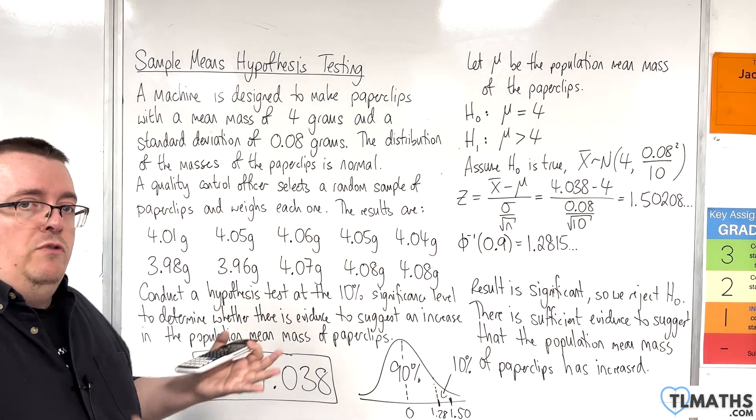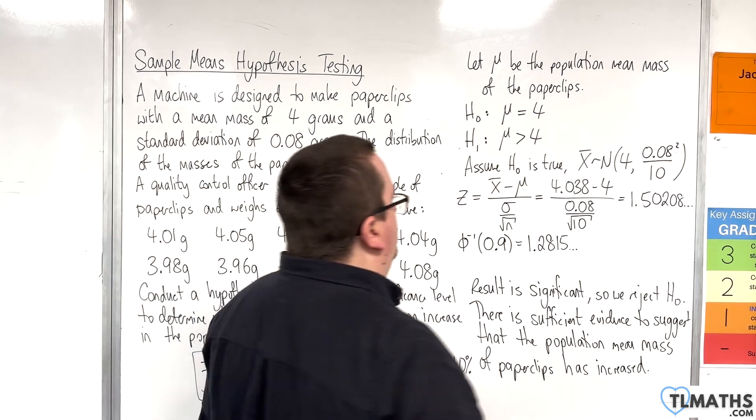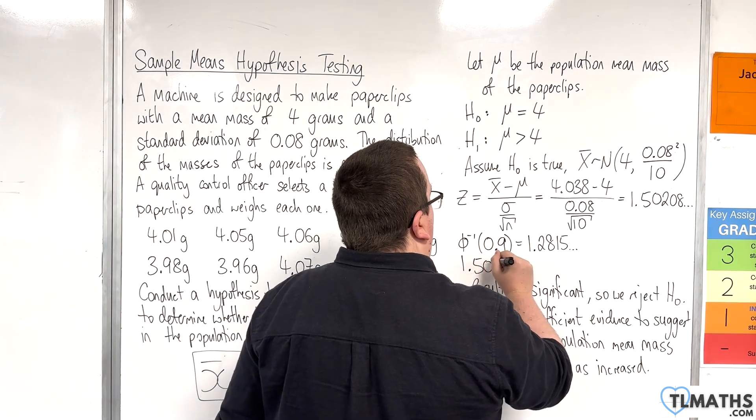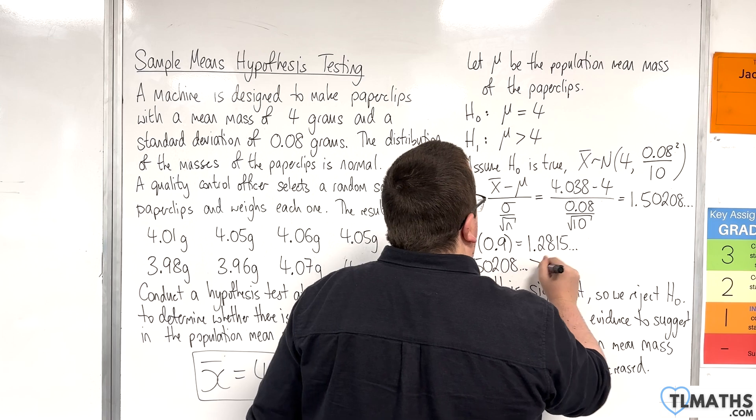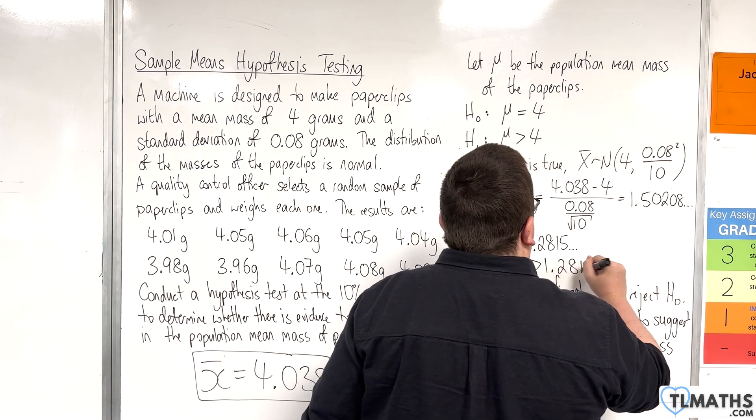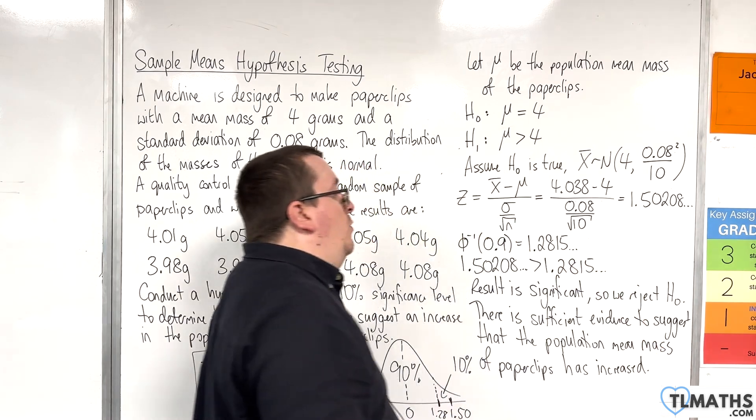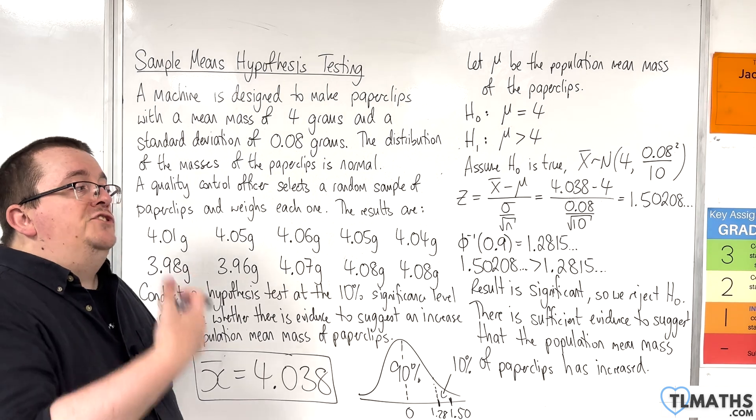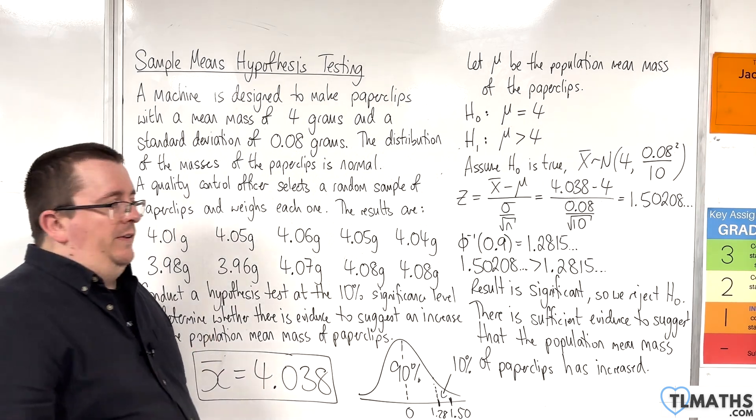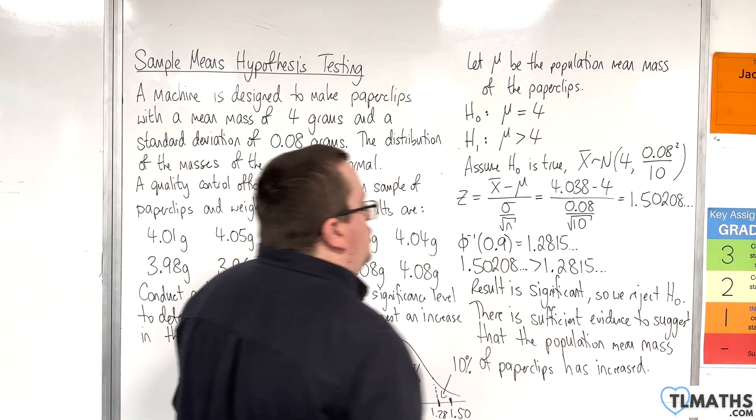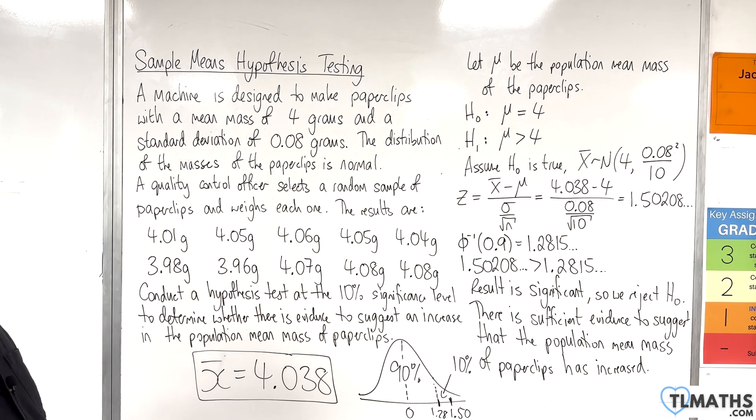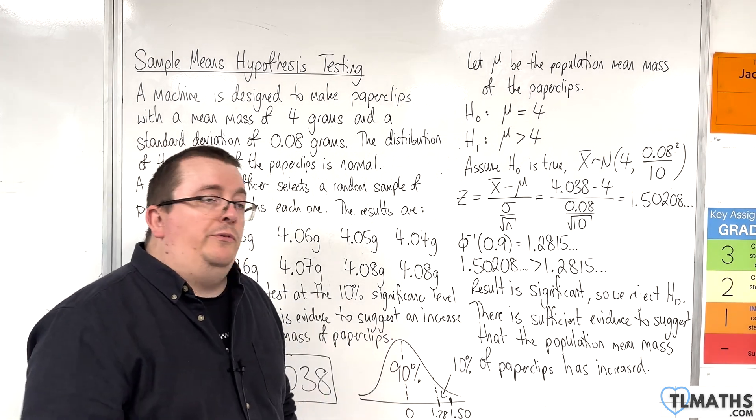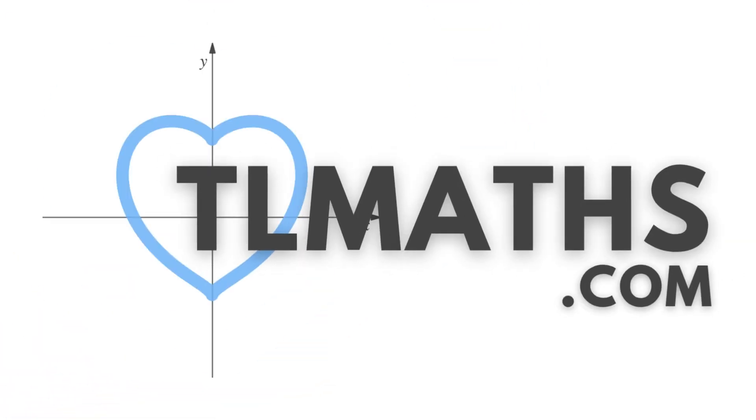So 1.50208 is greater than 1.2815, so the result is significant. So we reject the null hypothesis. There is sufficient evidence to suggest that the population mean mass of paperclips has increased.